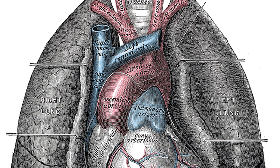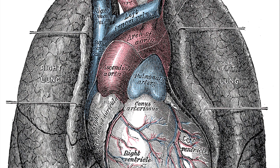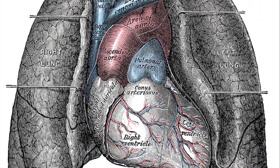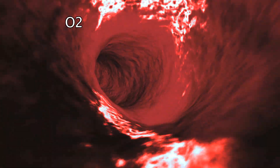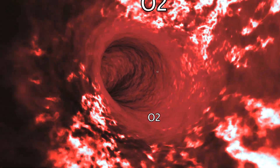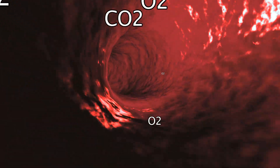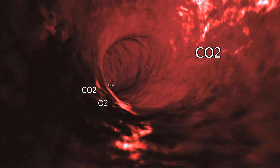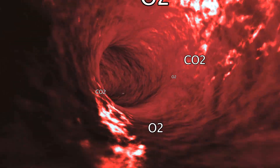Next are the lungs. The lungs are responsible for respiration, which supplies oxygen to the body. The lungs take oxygen from the air and put it into our bloodstream while simultaneously taking carbon dioxide out of our bloodstream and putting it back into the atmosphere.